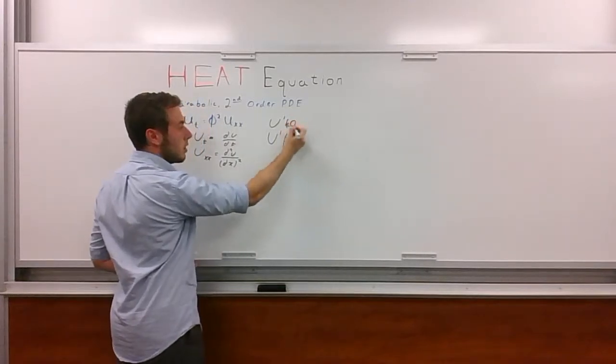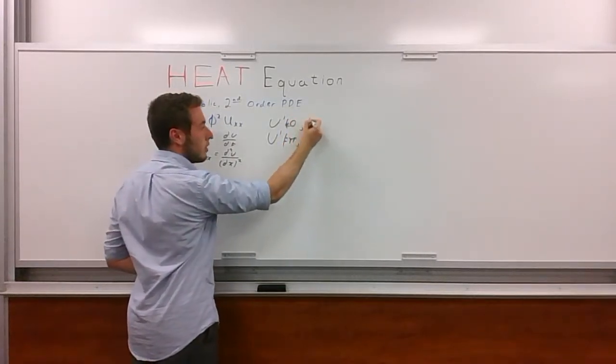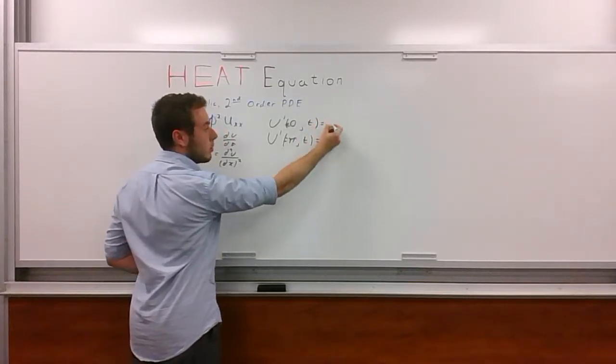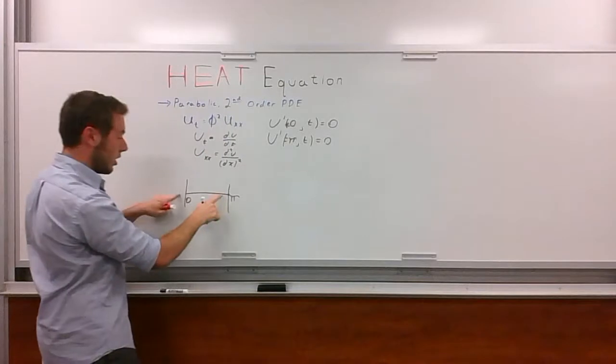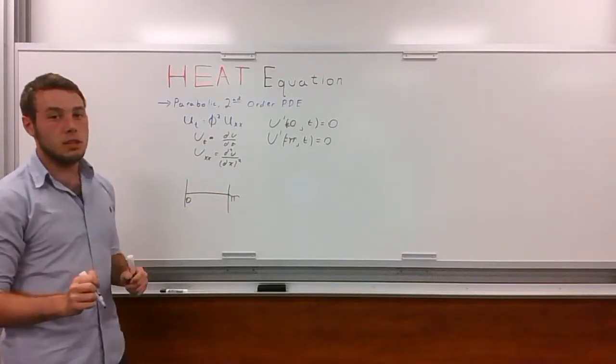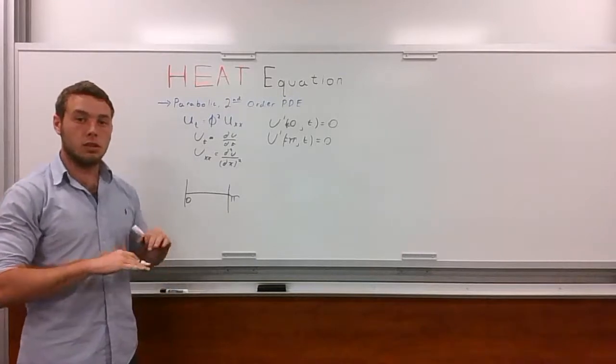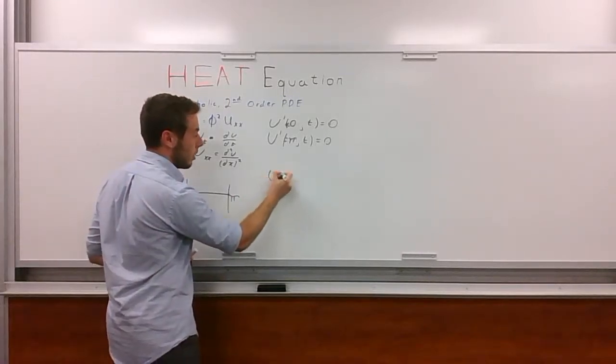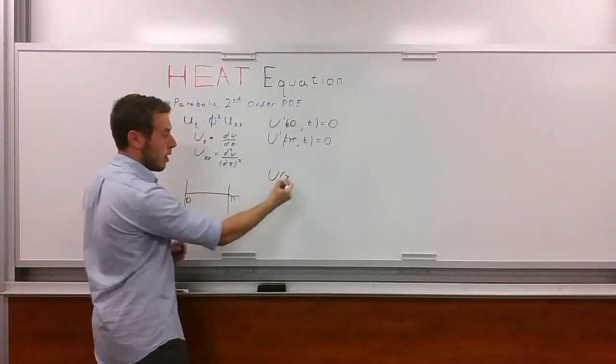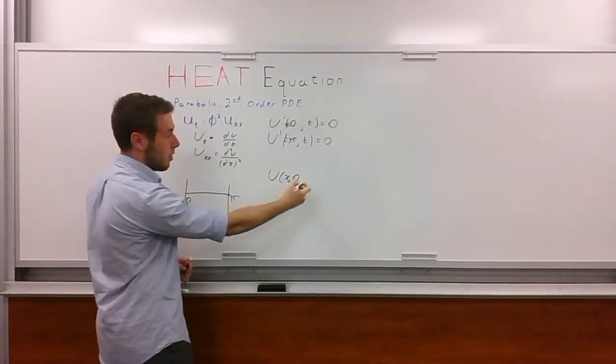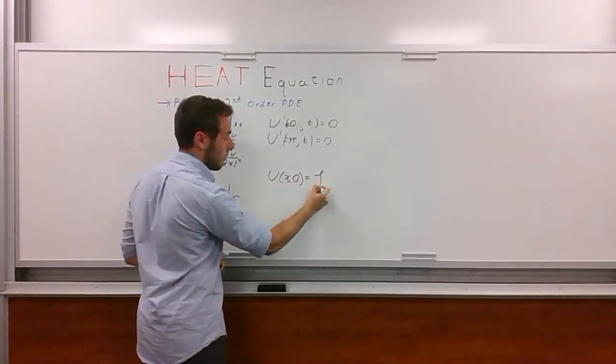u at 0, u at pi, and they're continuous throughout time. And we're going to say that these are both equal to 0, so the change in temperature at the ends of our rod is 0. The next condition that we have is the initial distribution of temperature. This is going to say u of x, throughout the whole rod at time 0, equals f of x.